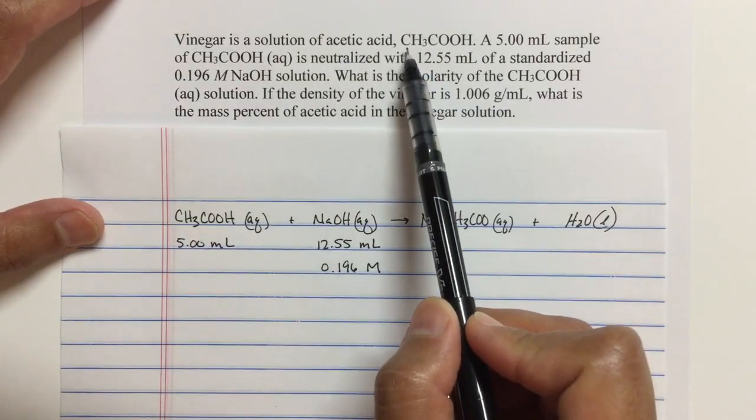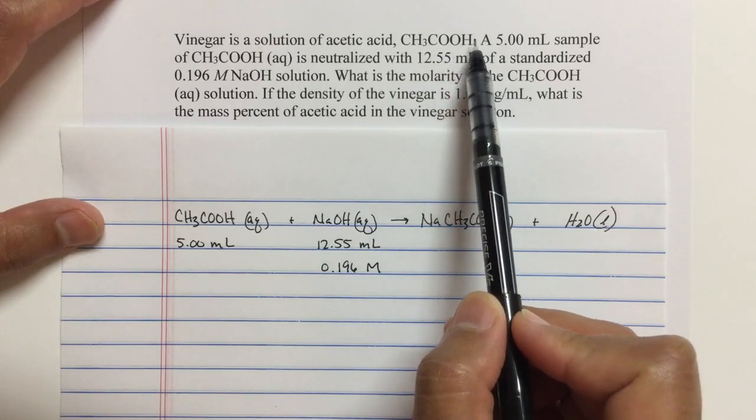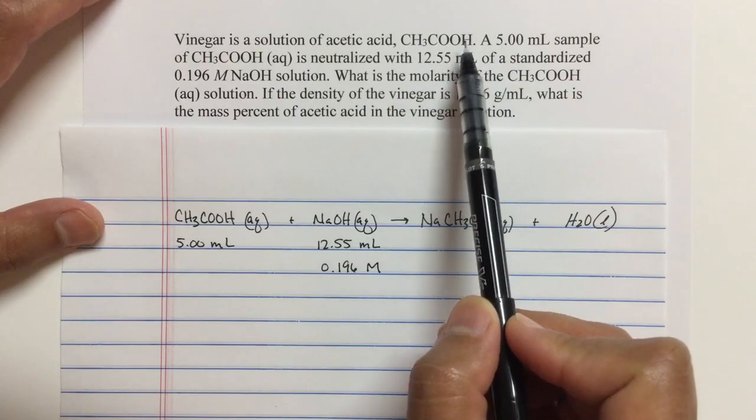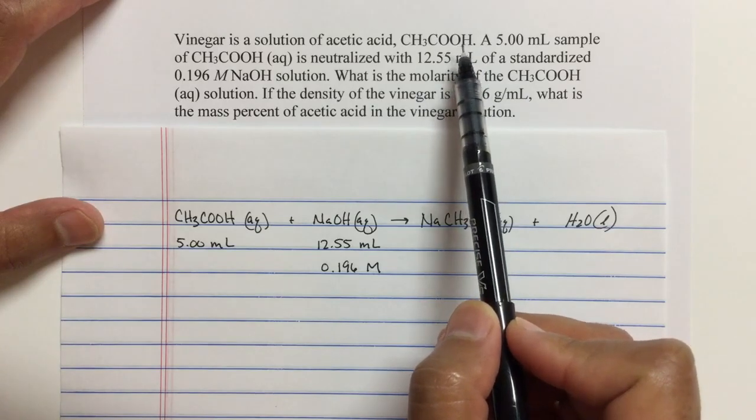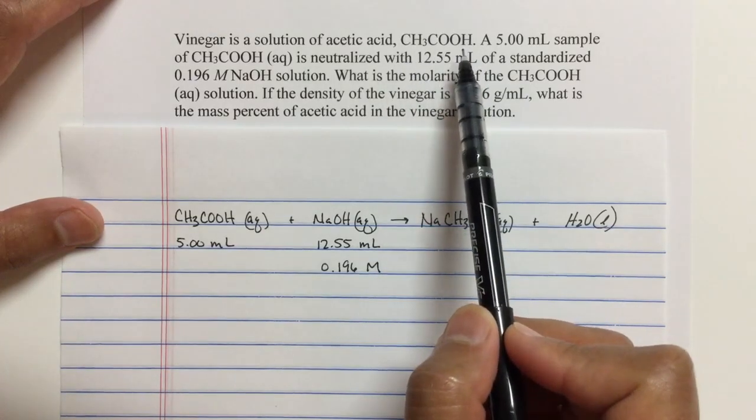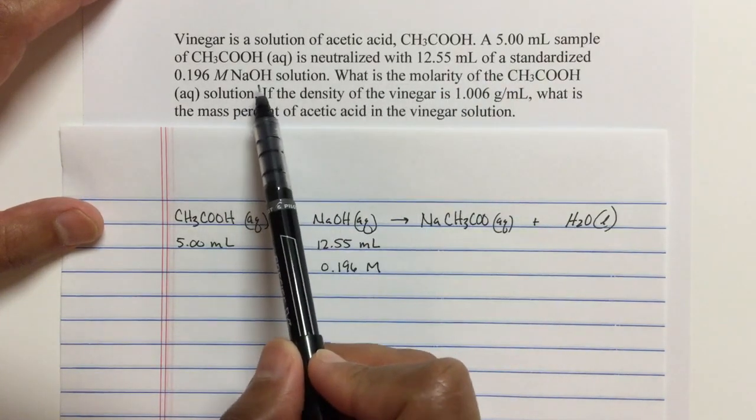Acetic acid has the formula CH3COOH. Now, the hydrogen, the acidic hydrogen, is typically written here at the end. But we're going to take this vinegar solution, and we're going to titrate 5 milliliters with sodium hydroxide.